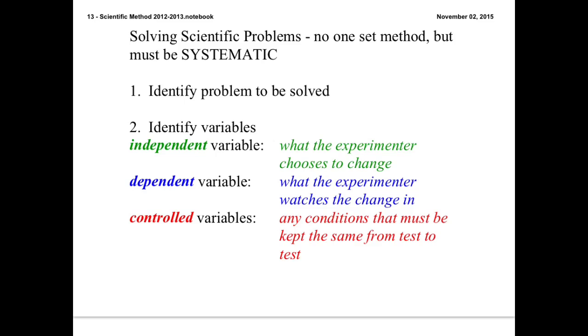Before you do anything, obviously you need to figure out what's the problem you're trying to solve. What are you trying to discover? In doing so, you'll probably have some variables that you're going to want to examine. Typically, the independent variable is the item that you are choosing to change within your experiment. The dependent variable is usually what you're going to look at that changes as a result of what you change. Any other variable in your experiment must be controlled. In other words, it cannot change from trial to trial, but must always be the same.